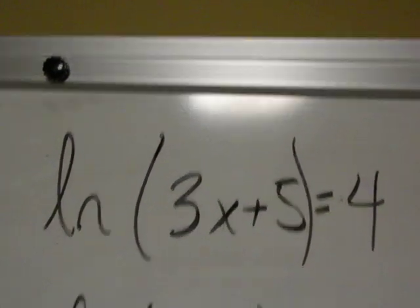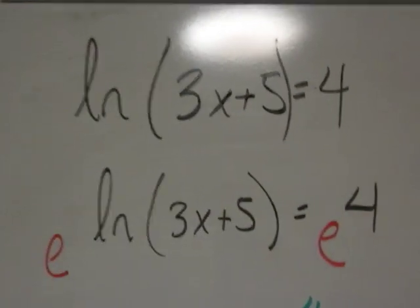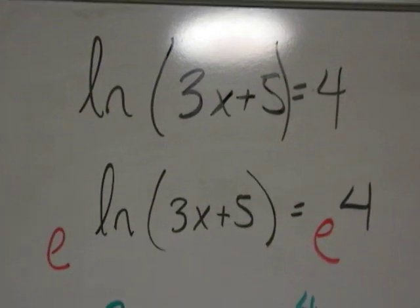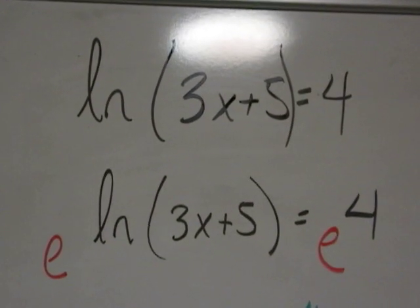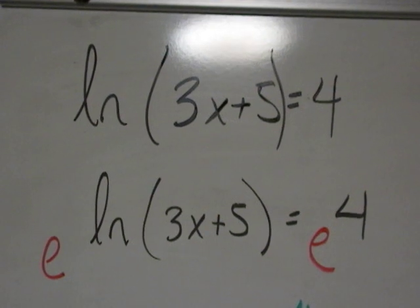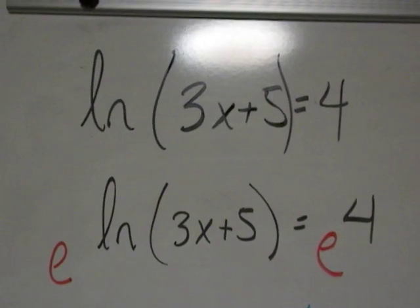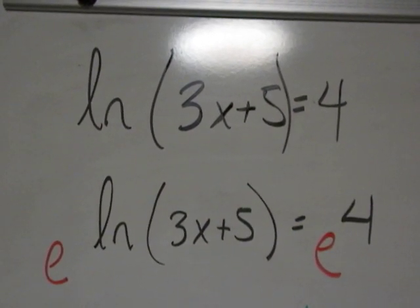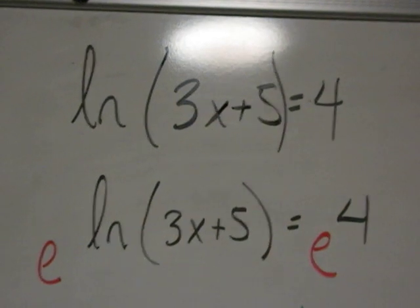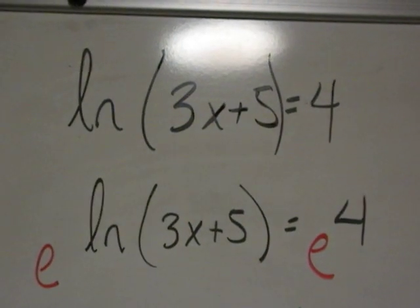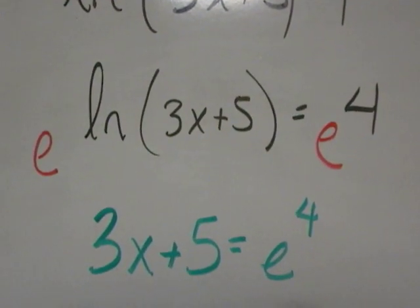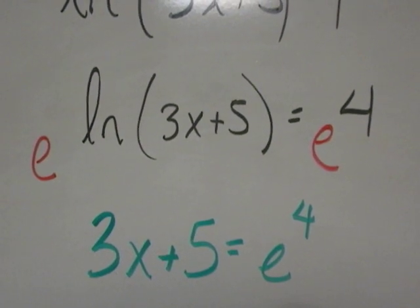When I apply the e this time, in my mind I'm going to kind of write it so it looks like it's a subscript, so that everything else becomes a superscript. On the left-hand side, the e and the natural log cancel each other out, so the 3x plus 5 is alone, but the 4 becomes a power on the e. So it's now 3x plus 5 is equal to e to the fourth power.